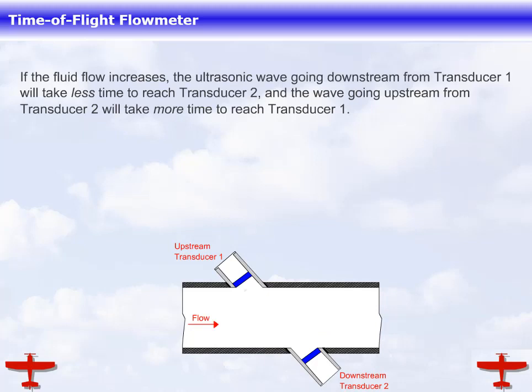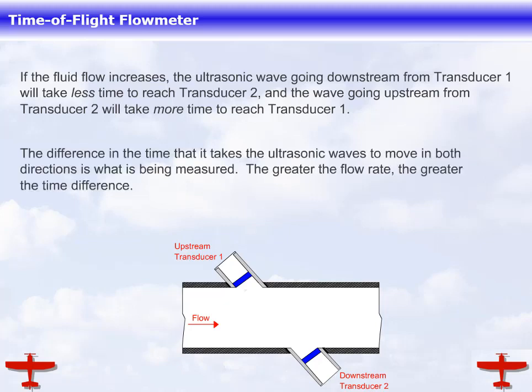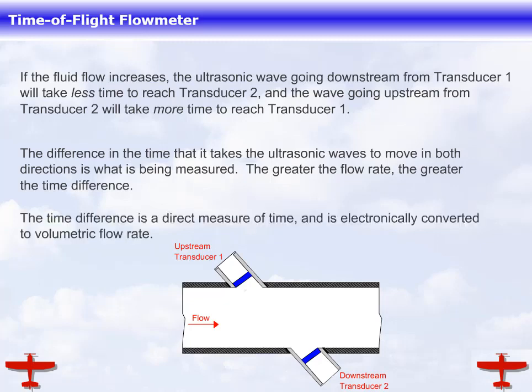If the fluid flow increases, the ultrasonic wave going downstream from transducer 1 will take less time to reach transducer 2, and the wave going upstream from transducer 2 will take more time to reach transducer 1. The difference in the time it takes the ultrasonic waves to move in both directions is what is being measured. The greater the flow rate, the greater the time difference. The time difference is a direct measure and is electronically converted to volumetric flow rate.